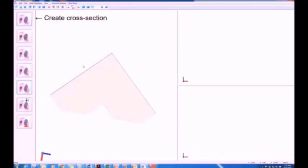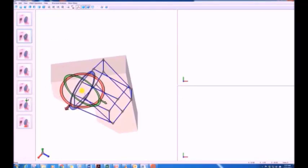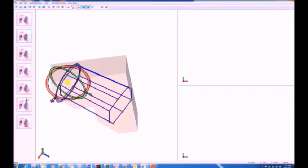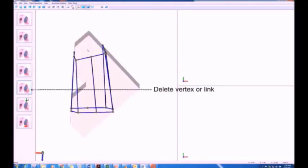First, the user imports the desired surface mesh file into the interface. The user is provided with a list of functionalities. The CreateCrossSection function allows the user to generate cross-sectional elements across the mesh.